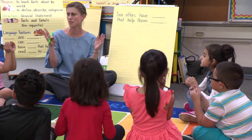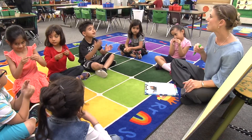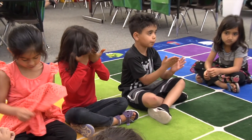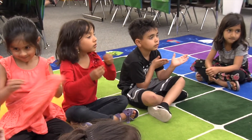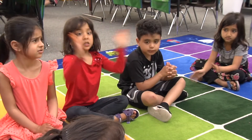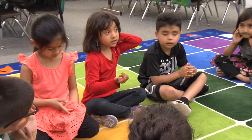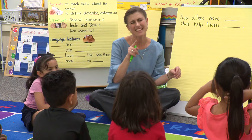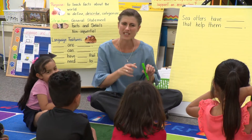The teacher asks the class to show if they agree or disagree. Another student, Masi, says: sea otters have sharp hands to cut open. The teacher again asks the class to show agreement or disagreement, and some friends disagree. Nadia explains why: because they don't have sharp hands — I mean sharp paws — that help them cut their food. The teacher responds: I like how you changed that from hands to paws because we need to be specific.